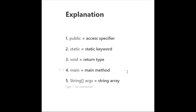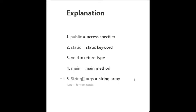The first keyword is `public`. Public is an access specifier — it defines the scope of a method. If it is public, you can access that method inside the package, outside the package, everywhere. This makes it easy for JVM to identify the main method. If we keep it as private, protected, or default, it will not be visible to JVM, and JVM will not be able to start execution of the Java program. That is why we keep it as public.